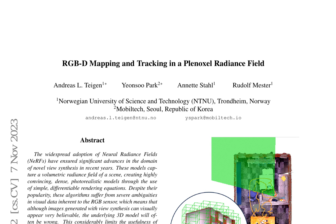In the realm of computer vision, the creation of dense maps and the tracking of camera motion in a known environment are essential tasks. These tasks have been challenging due to their technical and computational complexity, as well as their reliance on either a depth sensor or an assumption for image regions with no gradients. Despite these challenges, several noteworthy papers on dense mapping and tracking have emerged in recent years.